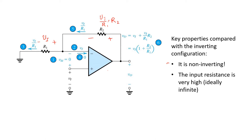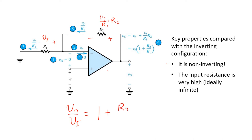This current flowing through R2 gives rise to a voltage drop across it equal to Vi over R1 times R2. Now that voltage appears in series on top of the voltage at this node, which is Vi. So the last step is to write the output voltage Vo as the sum of Vi plus the voltage across R2. We rearrange and group terms, and find the ratio Vo over Vi, which is the closed-loop gain, equal to 1 plus R2 over R1.